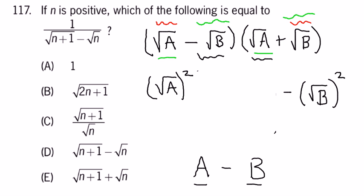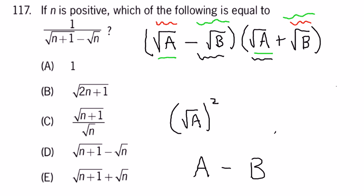So, let's say we started with A minus B and for whatever absurd reason we decided, hey, let's write this as square root of A squared minus square root of B squared. The factorization of that as a difference of squares is exactly the square root of A minus the square root of B times the square root of A plus the square root of B.